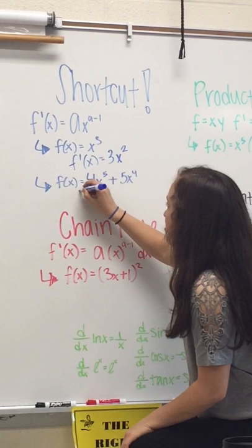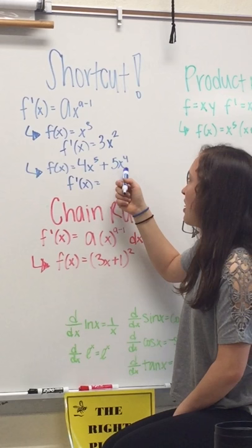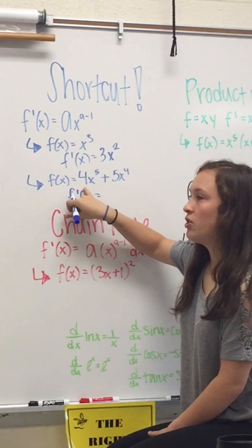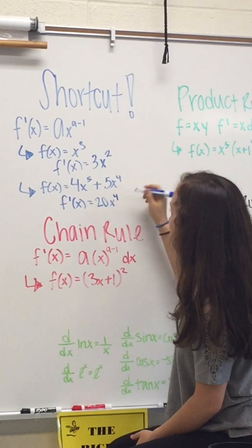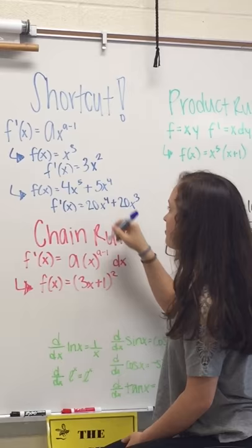Our next example, the original function is 4x to the 5th plus 5x to the 4th. You use the same method, take the exponent, and multiply it out front to the coefficient. 5 times 4, this would be 20x. Subtract 1, which would be 4. Plus, 5 times 4, 20x to the 3rd.